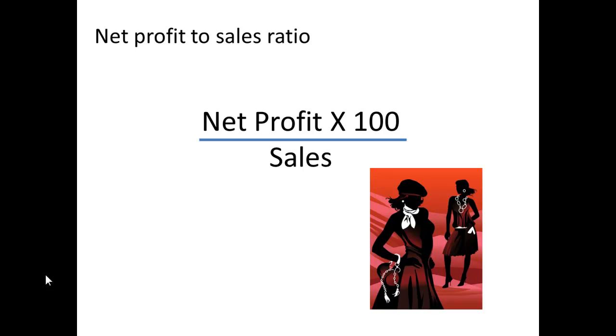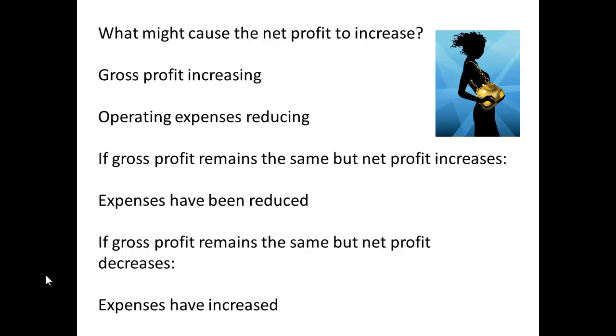First of all, what is the net profit to sales ratio? We take the net profit multiplied by 100 and divide by sales. It's quite a simple calculation.